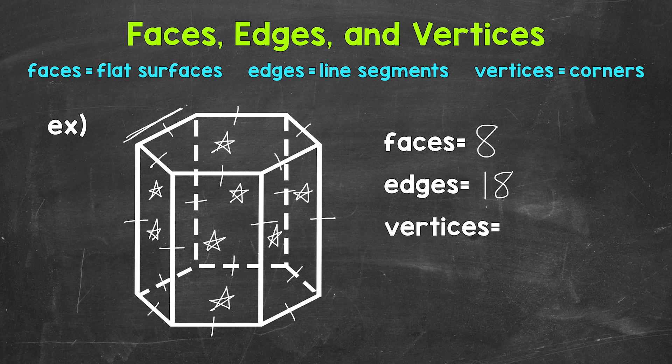And then lastly, let's identify and count all of the vertices. Now vertices are formed by three or more edges meeting. They are the corners or points. For example, this is one of the vertices right here. So let's start here. One, two, three, four, five, six.